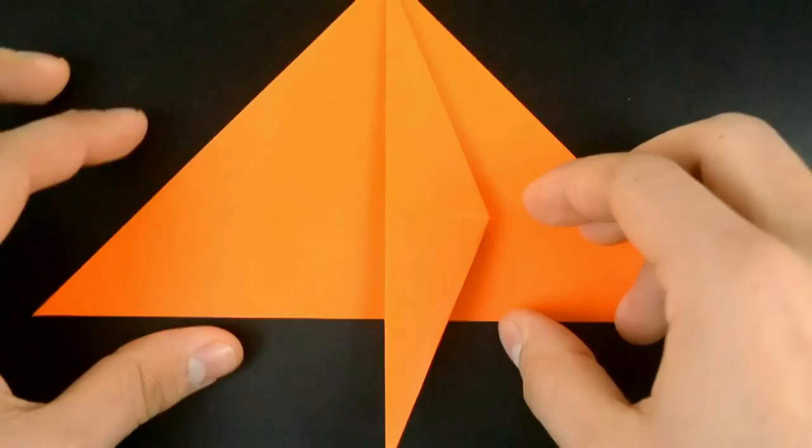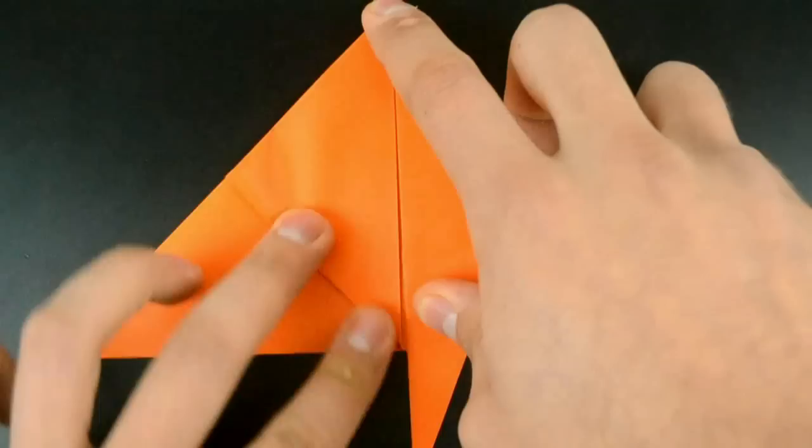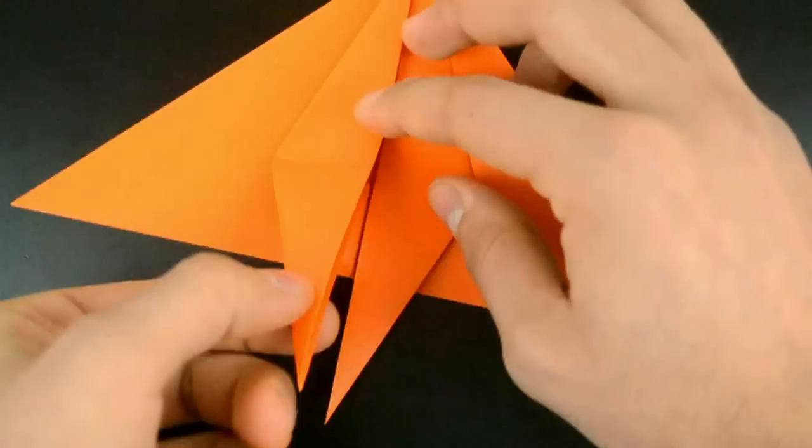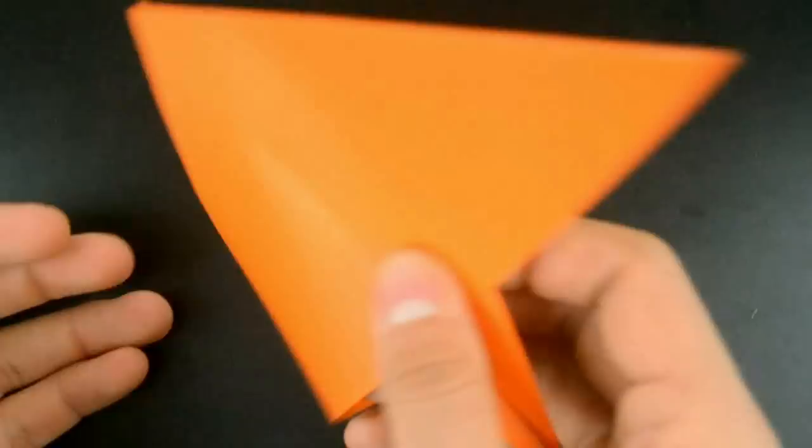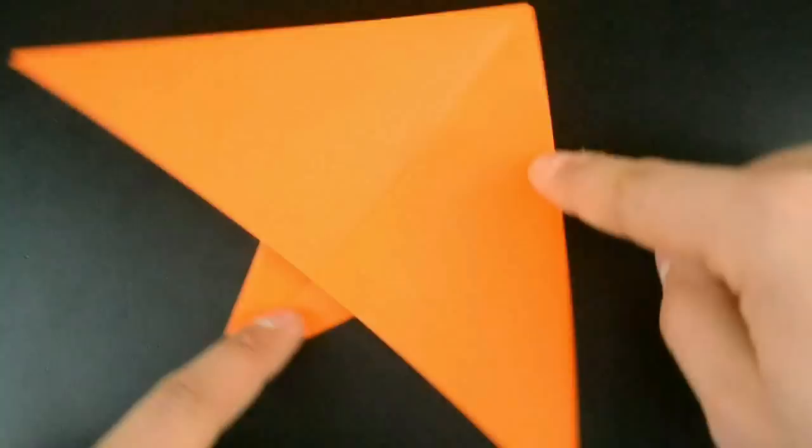Now repeat exactly the same on this other flap on the left side. Now turn the paper over, rotate and fold in half.